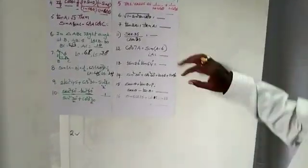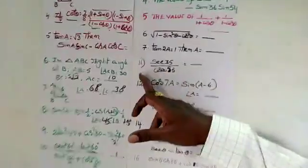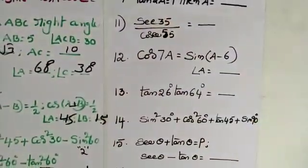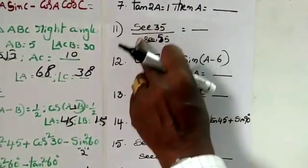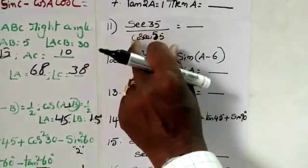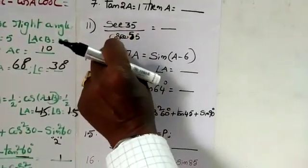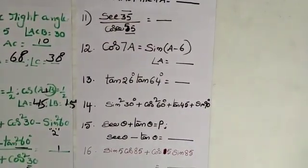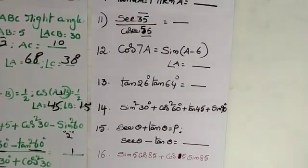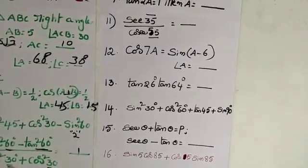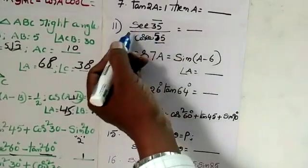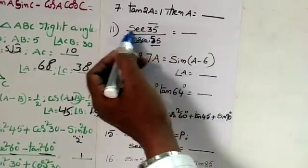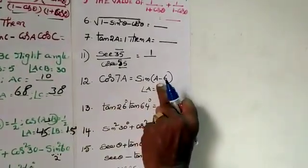Now you are going to discuss another bit - the 11th bit. Here for this type of problem, when given a fraction or product form, add them. For example sec 35 in numerator and cosec 55 in denominator - the sum of these two angles equals 90, so automatically it goes to 1. So it goes to 1 here. This is a very logical problem.